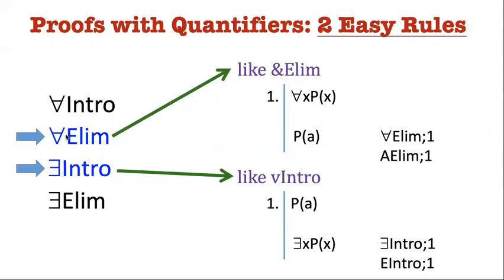Universal quantifier is a lot like a conjunction actually, because think about it this way. If I'm saying every object in the domain has property P, what if I only had a finite number of objects in my domain like A, B, and C? Well, then the universal claim that everything has P is a lot like just saying A has P, B has P, and C has P. So a universal quantifier is quite a bit like a conjunction. And that's why universal elim is easy. Conjunction elim is easy too.